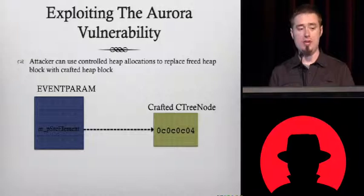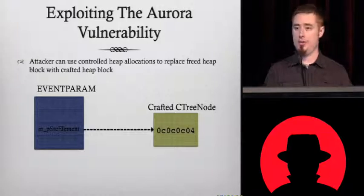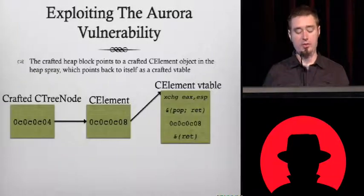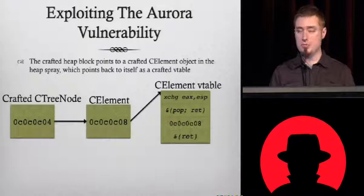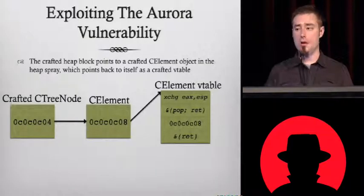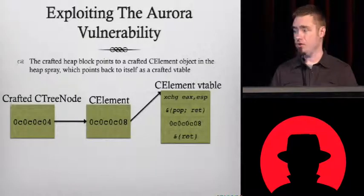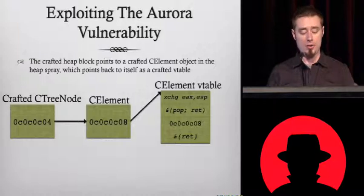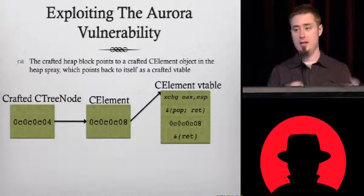You just cause that allocation, overwrite it with custom data, and you now have controlled the full cTreeNode. What we do with that, for a simple naive exploit that uses a heap spray, is we're just going to point that into the heap spray.